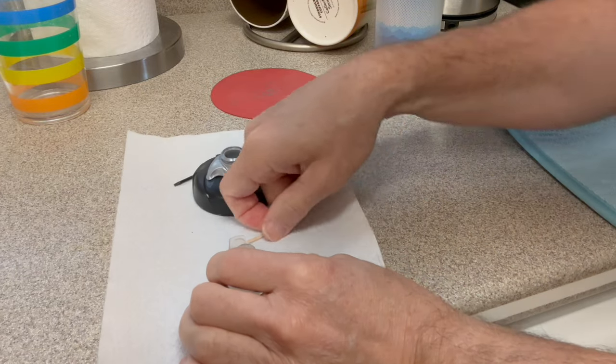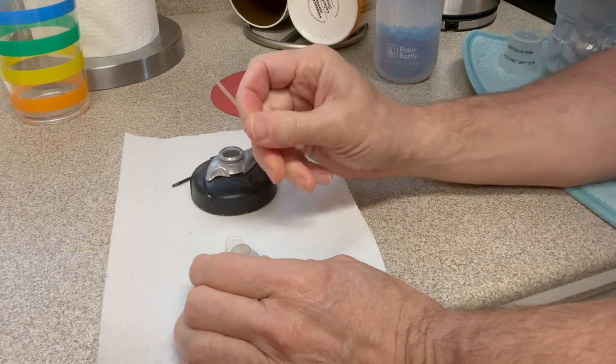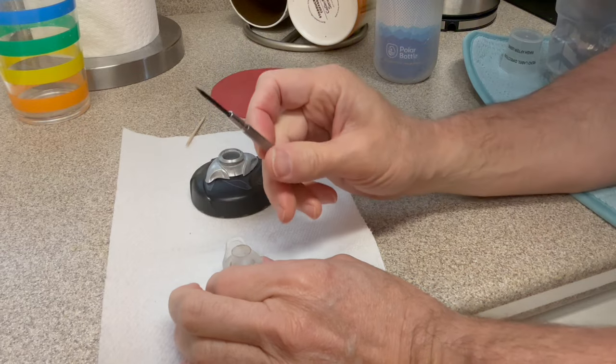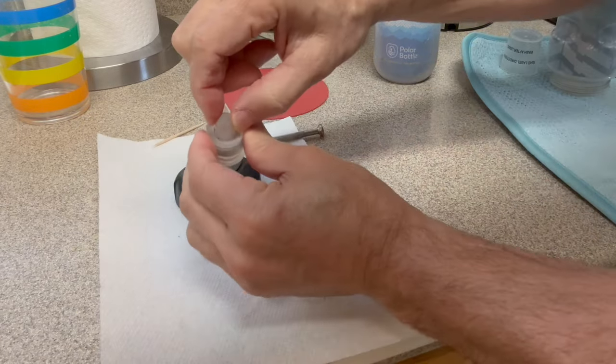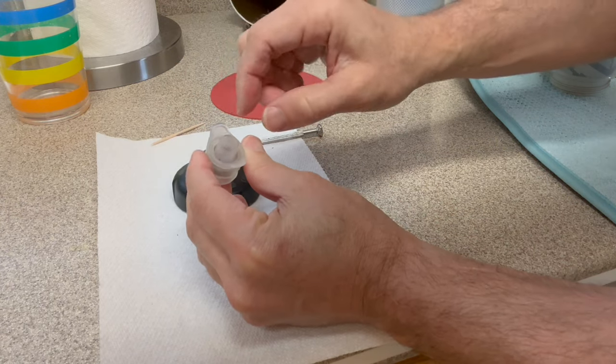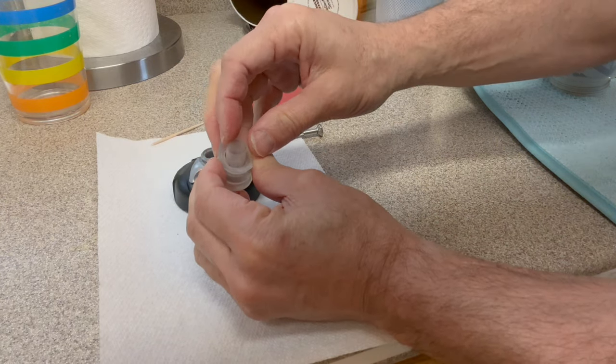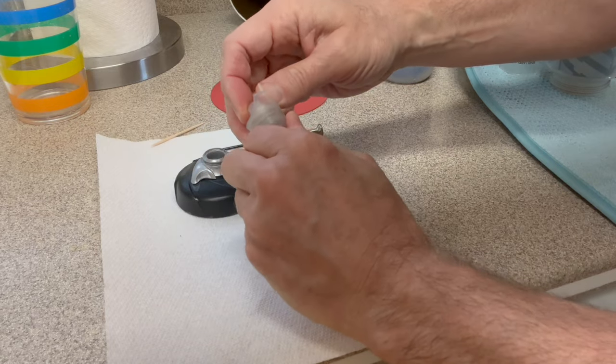You can use a toothpick or a small screwdriver. The whole idea is we have to remove this section in order to clean all that inside, because it's extremely dirty.